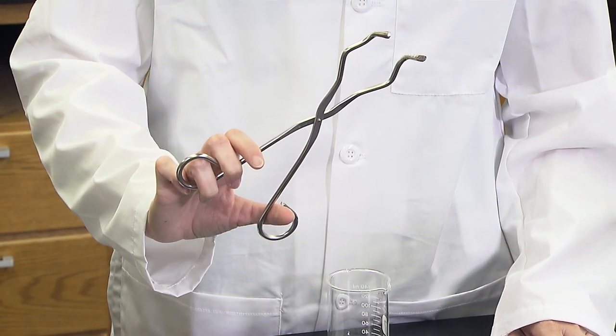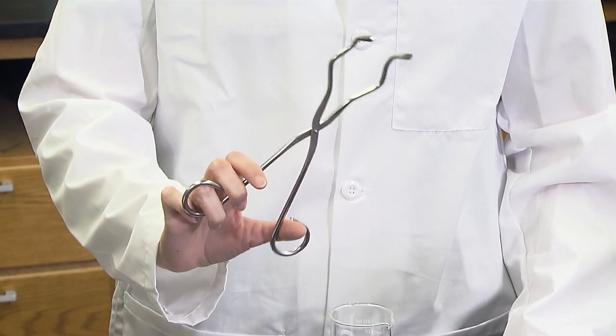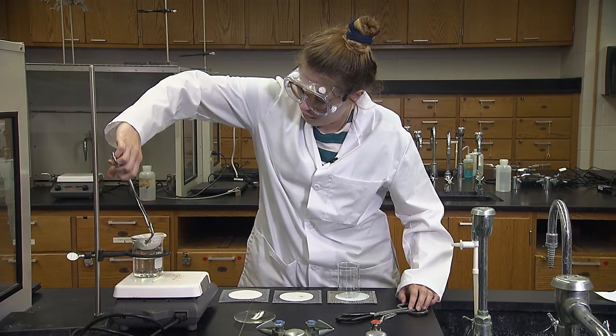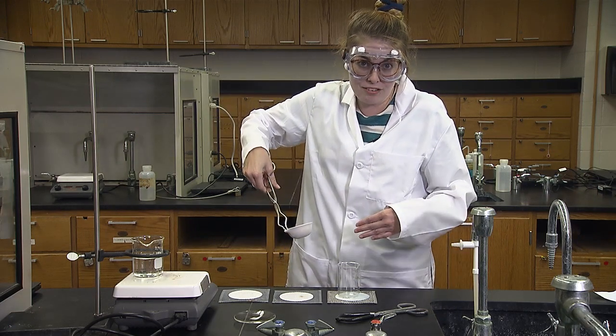When removing the hot evaporating dish, use the crucible tongs found in the general equipment drawer. Again, you place it on the mat to cool.